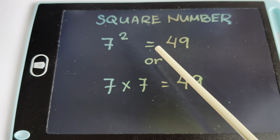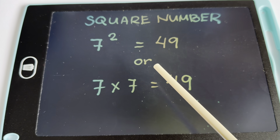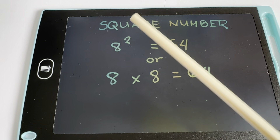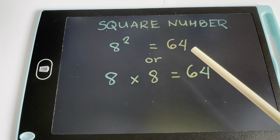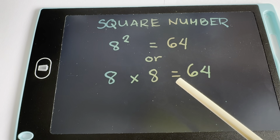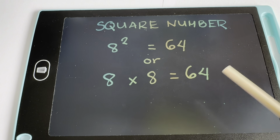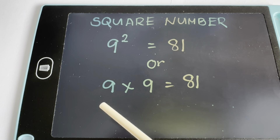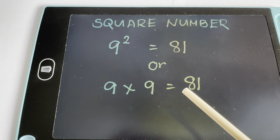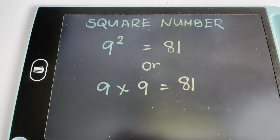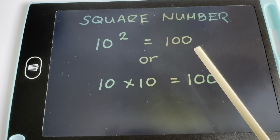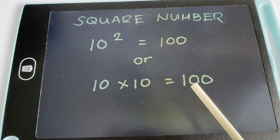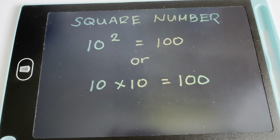7 squared is equals to 49, or 7 times 7 is equals to 49. 8 squared is equals to 64, or 8 times 8 is equals to 64. 9 squared is equals to 81, or 9 times 9 is equals to 81. And lastly, 10 squared is equals to 100, or 10 times 10 is equals to 100. The end.